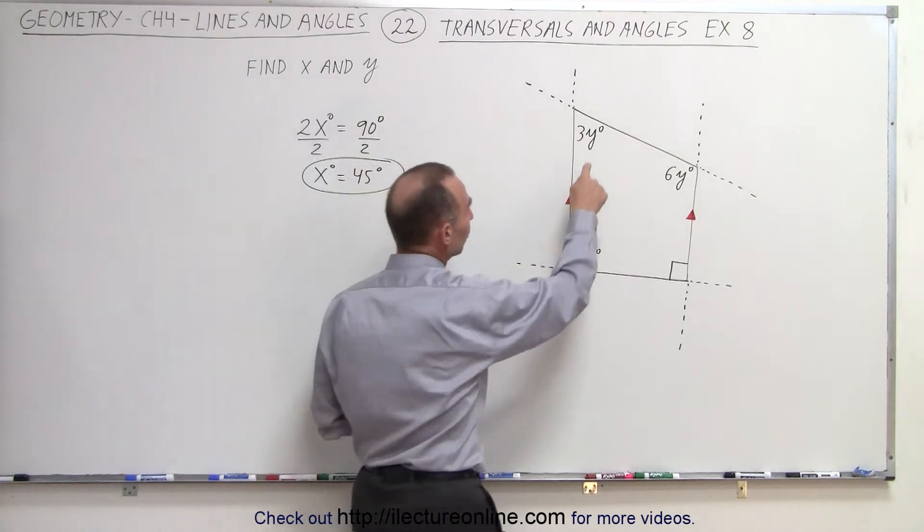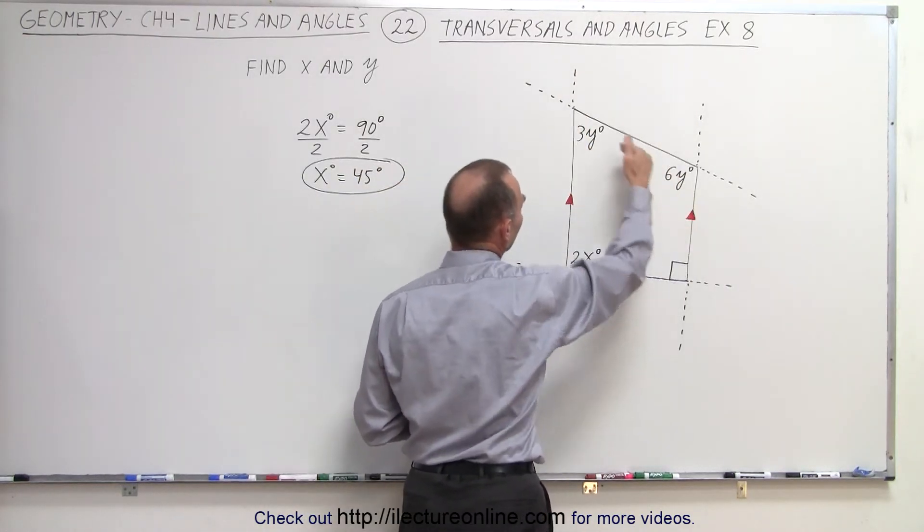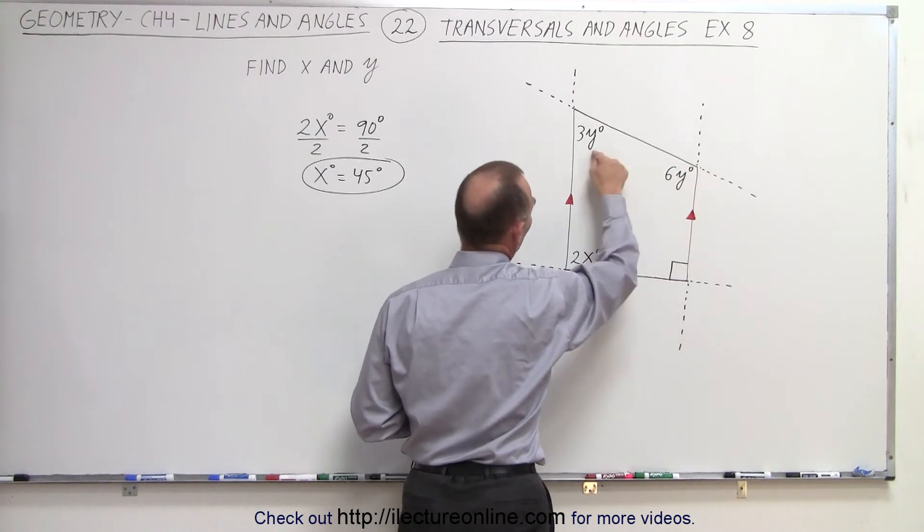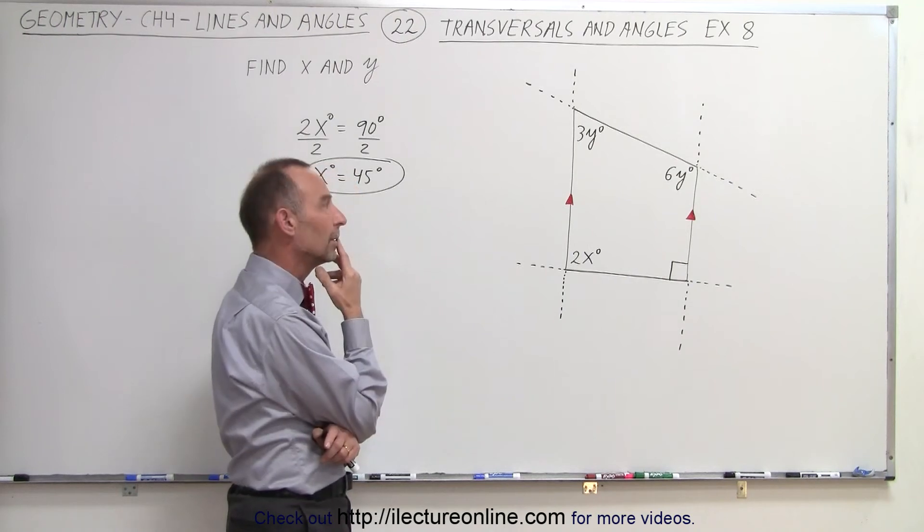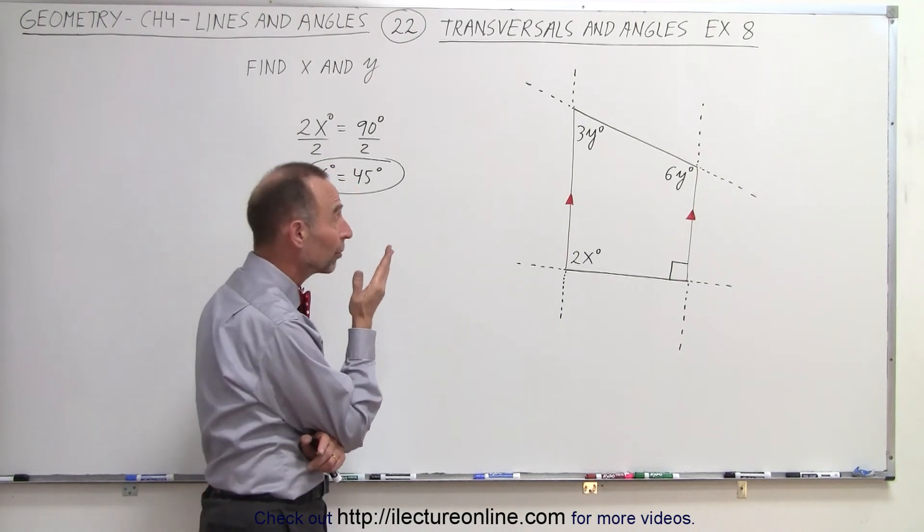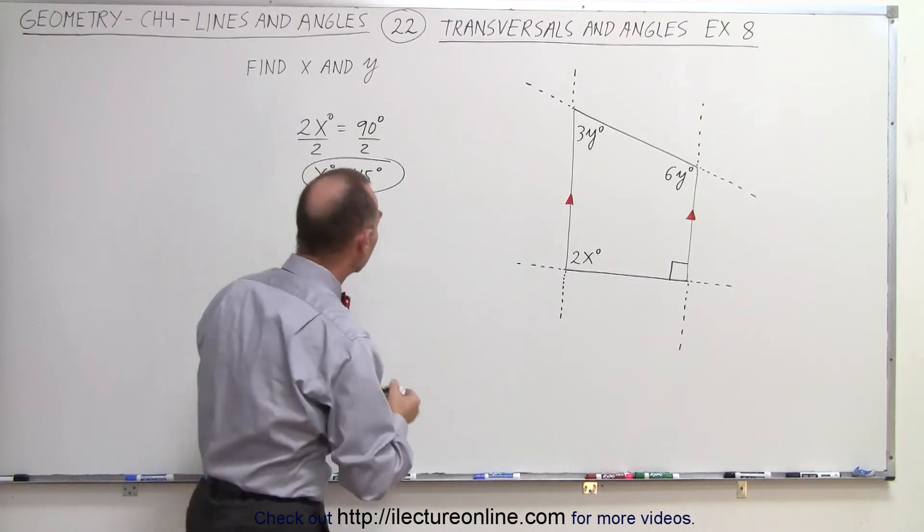Next, we look at these two angles right here, and notice that if these are two parallel lines and this is a transversal, these are consecutive interior angles. What do we know? Well, they are consecutive interior angles, so that means their measures must add up to 180 degrees, which means that 3y degrees plus 6y degrees must equal 180 degrees.